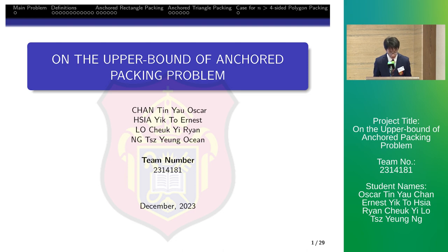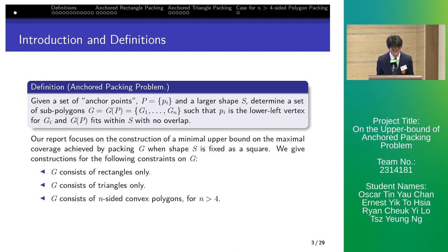The anchored packing problem is as follows. A set of anchor points is given, and we determine a set of smaller polygons to be fitted within a larger shape S without overlap. The packed polygon GI has its lower left vertex at PI.